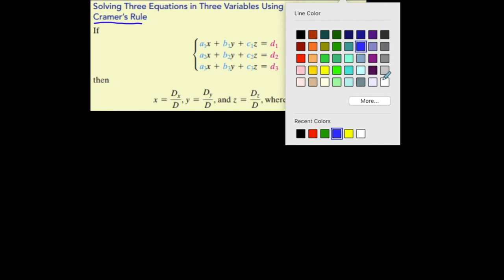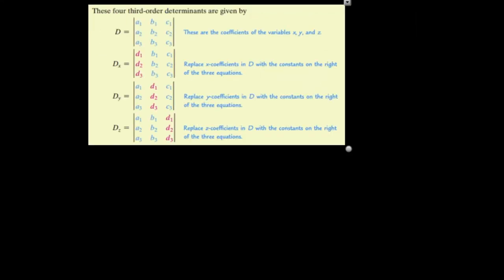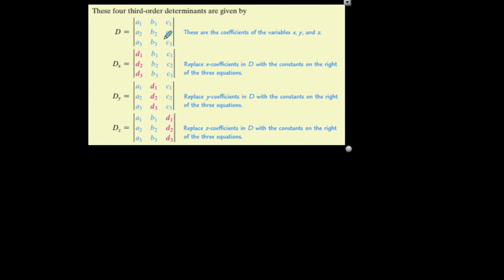If it were two variables, you just use x and y instead of z. So I have the rules here, but let me show you what it means. Let's take this system. D is the determinant of the coefficient matrix, so let's find the coefficient matrix.